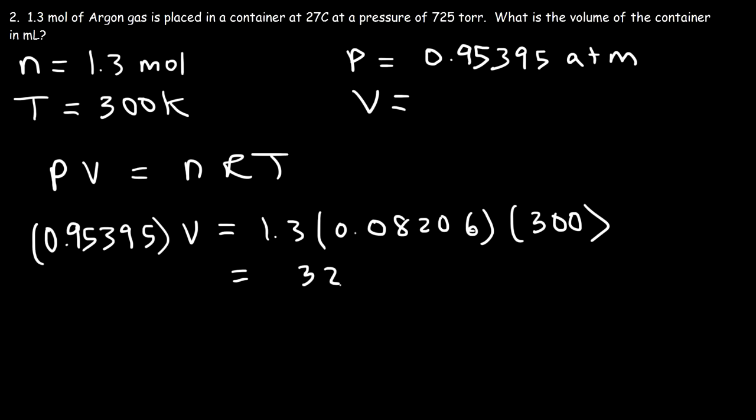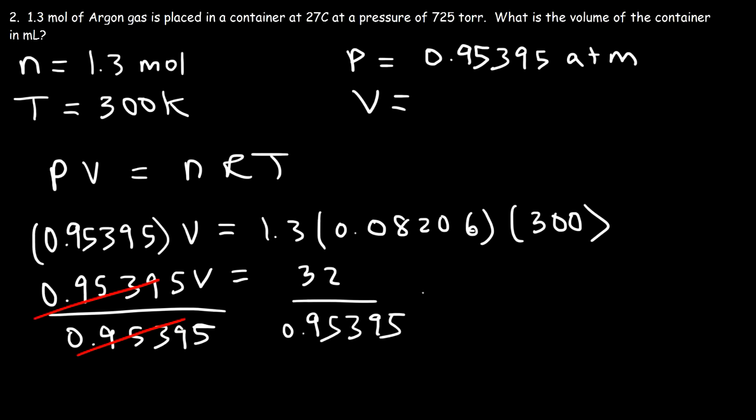So let's multiply the three numbers on the right: 1.3 times 0.08206 times 300. That's about 32.003. So now let's divide both sides by that number. So on the left side we can cancel these two, and so V is 32 divided by 0.95395, and so that's going to be 33.54 liters.